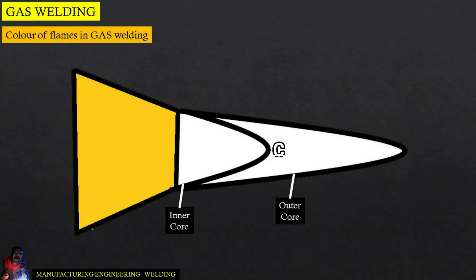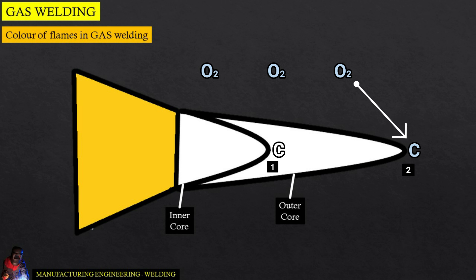The carbon atom from acetylene (C₂H₂) leaves the inner zone, denoted by point one, and reaches the extremes of the outer zone, denoted by point two. This is done in search of oxygen — it fetches oxygen from air. We use the word 'air' here because oxygen directly cannot be used, as air is a mixture of gases of which oxygen is one component.